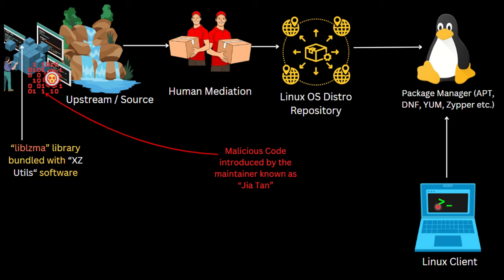Clients started getting updated, but fortunately the malicious code was caught very early — within just two weeks of being introduced. That is the only reason many Linux clients did not receive this update and a massive impact was avoided. The software engineer who discovered this vulnerability is credited with saving the Linux world. If it hadn't been discovered within those two weeks and had spread through official distribution repositories worldwide, the entire Linux world would have been compromised.